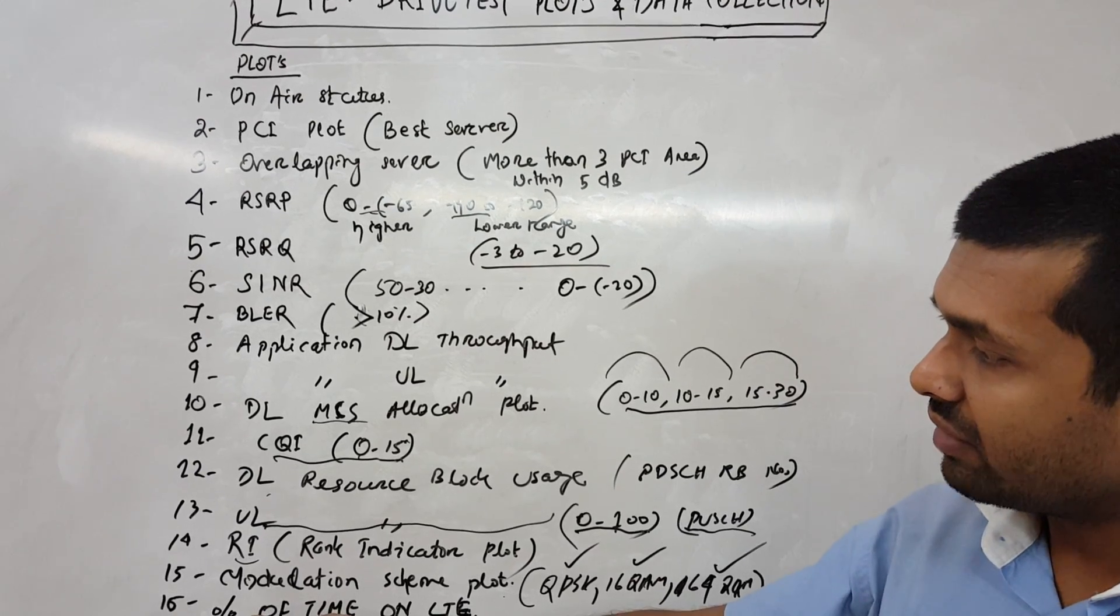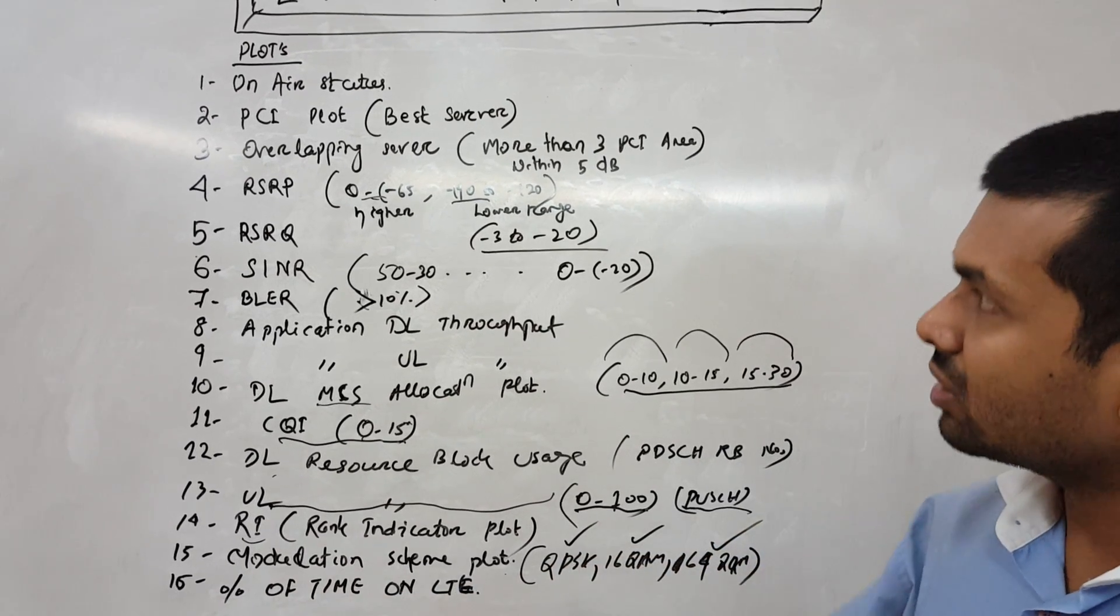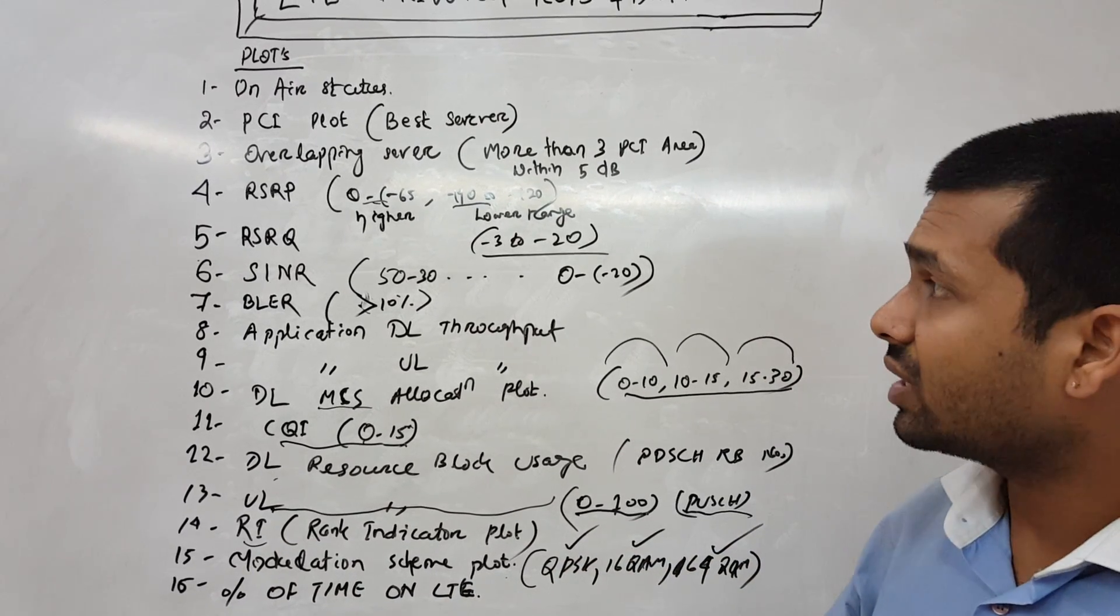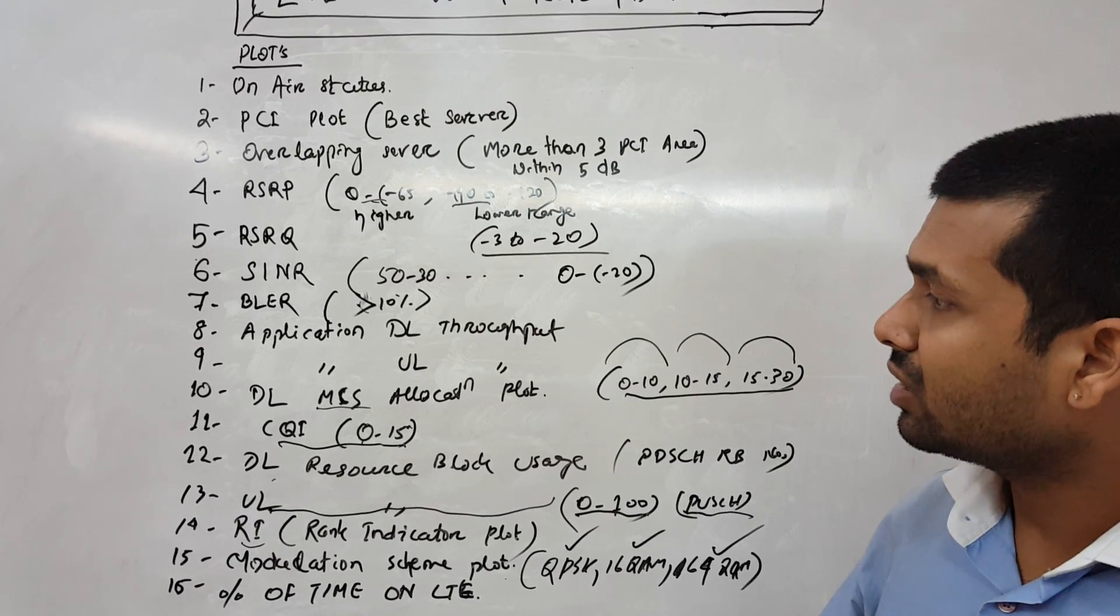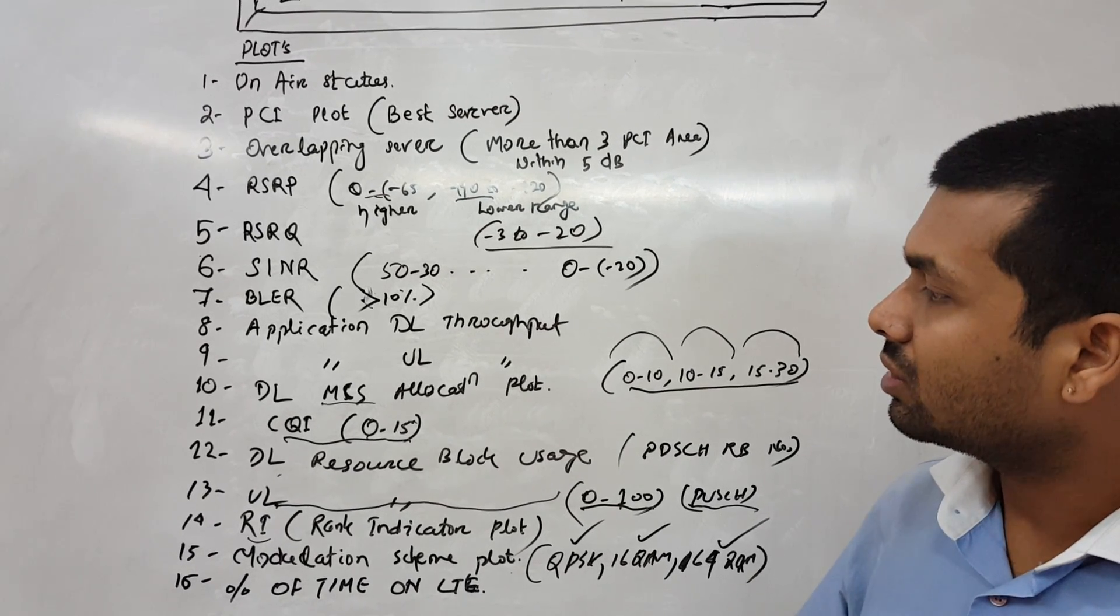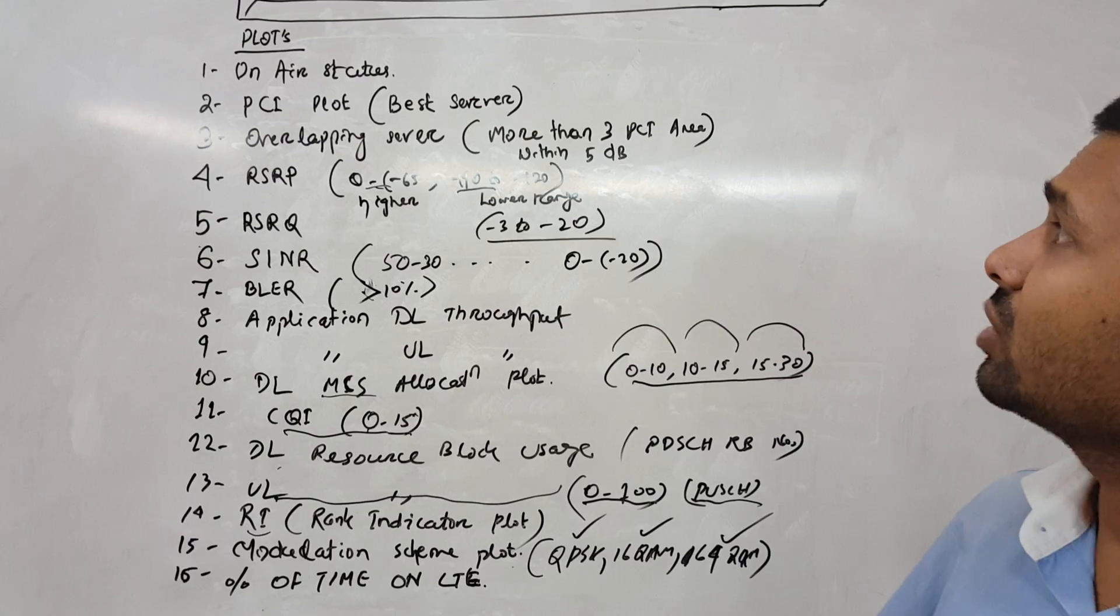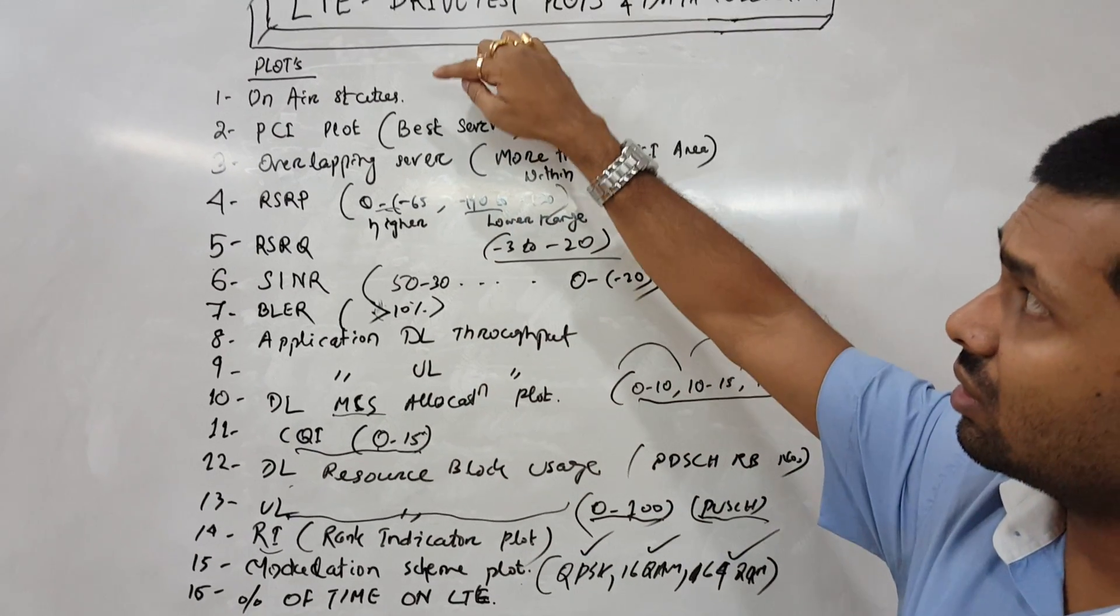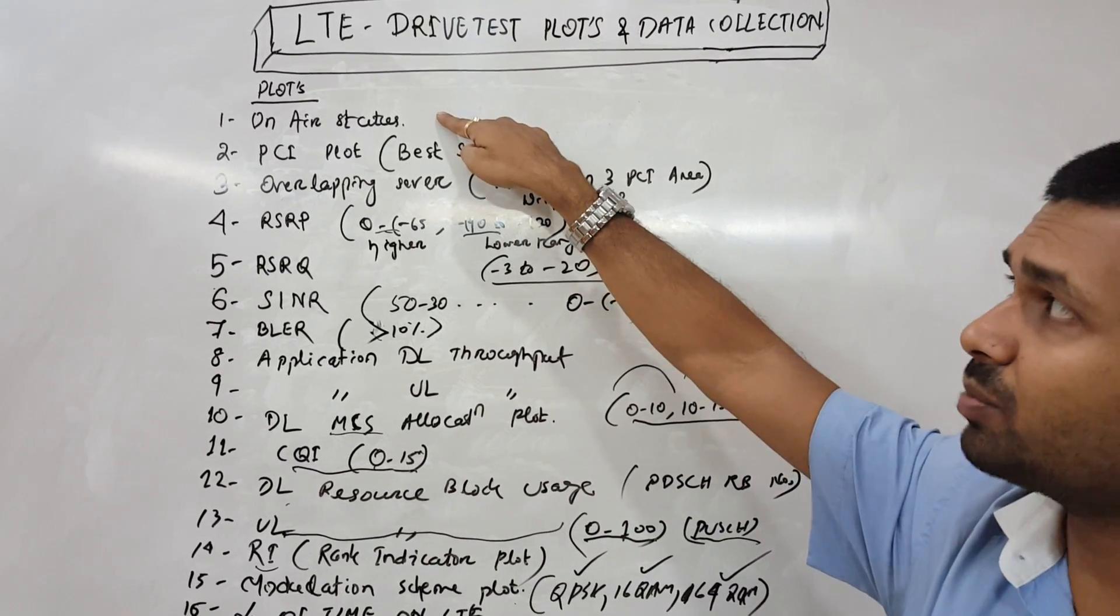So let's focus now on the drive test plot collection. I have identified 16 important items which we should collect for better field optimization in the network. We'll go one by one.